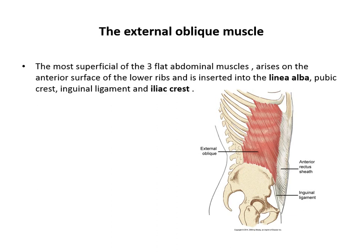First, the external oblique muscle. This is the most superficial of the three abdominal flat muscles. It arises from the anterior surface of the lower ribs and is inserted into the linea alba, pubic crest, inguinal ligament, and the iliac crest. Its fibers run inferomedially.